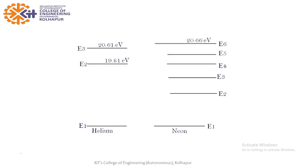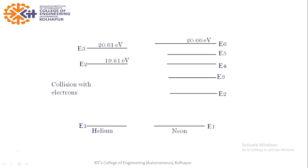Now we shall discuss the working with the help of an energy level diagram. You can see the energy levels of Helium and Neon are similar — E3 of Helium matches with E6 of Neon, and E2 matches with E4 (approximately 2.61 and 2.66 electron volts). Electrons collide with Helium atoms, exciting them to energy levels E2 and E3. These then collide with Neon, exciting Neon atoms to E4 and E6.